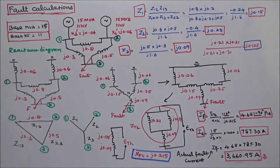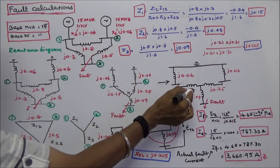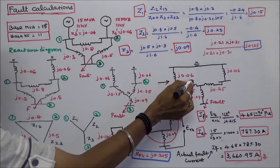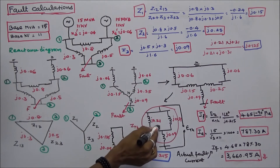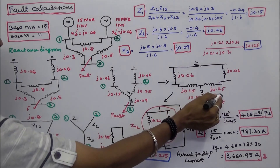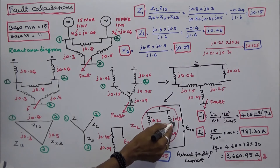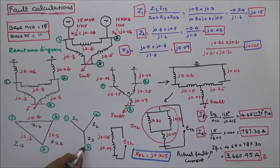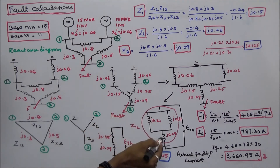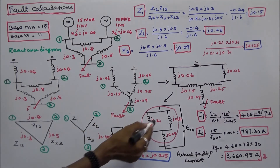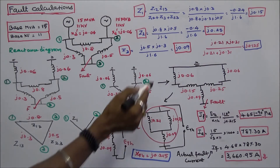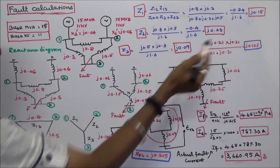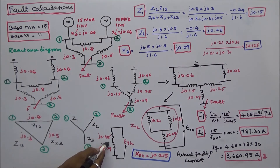Redrawing the circuit again, the generator reactances and star impedances in each branch are in series. J0.15 plus J0.06 equals J0.21, and J0.25 plus J0.06 equals J0.31. The Z3 branch remains J0.09. These two series branches — J0.21 and J0.31 — are now in parallel: J0.21 multiplied by J0.31, divided by J0.21 plus J0.31, equals J0.125.